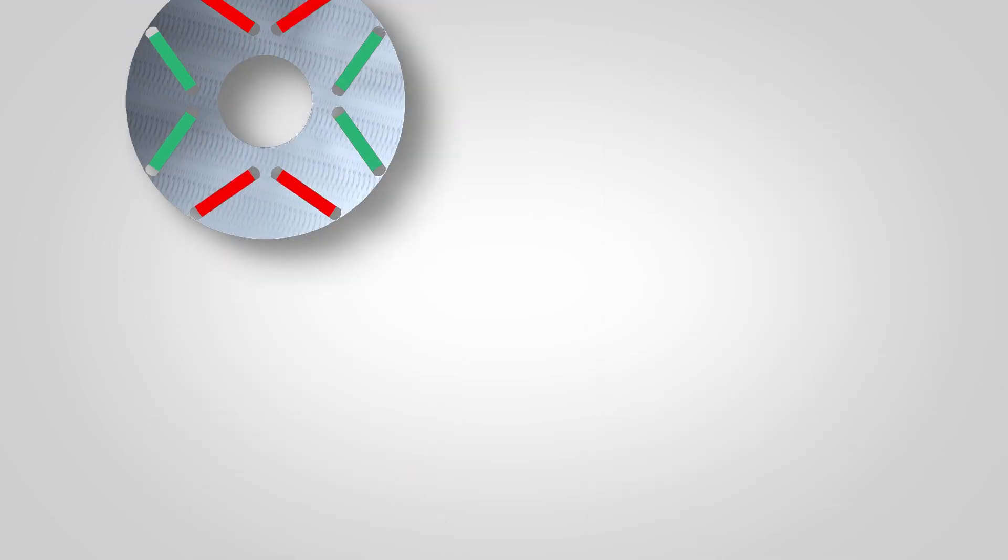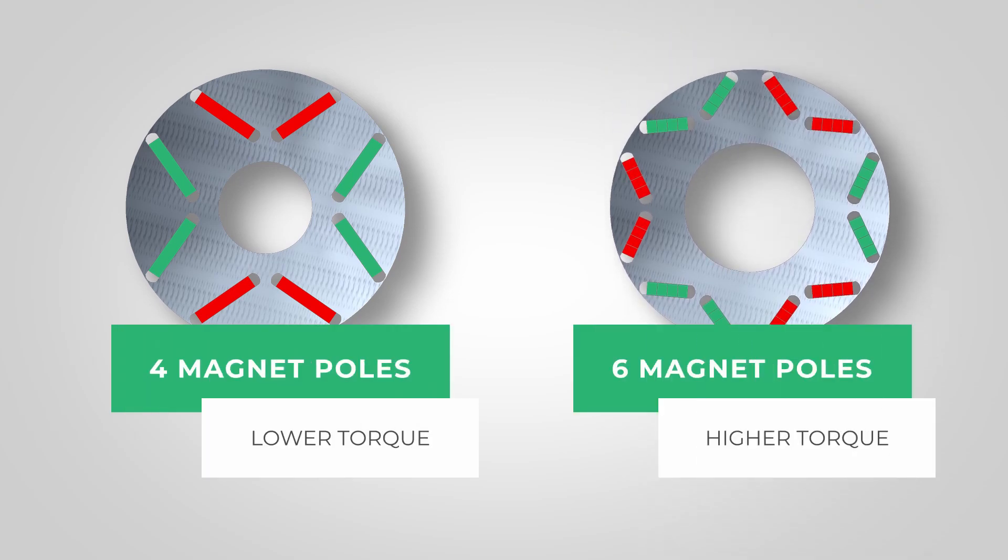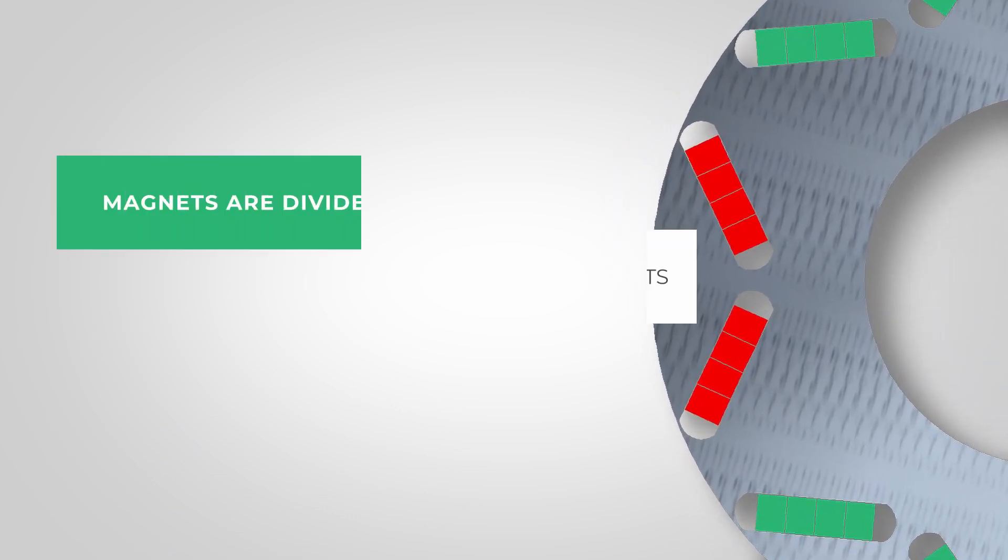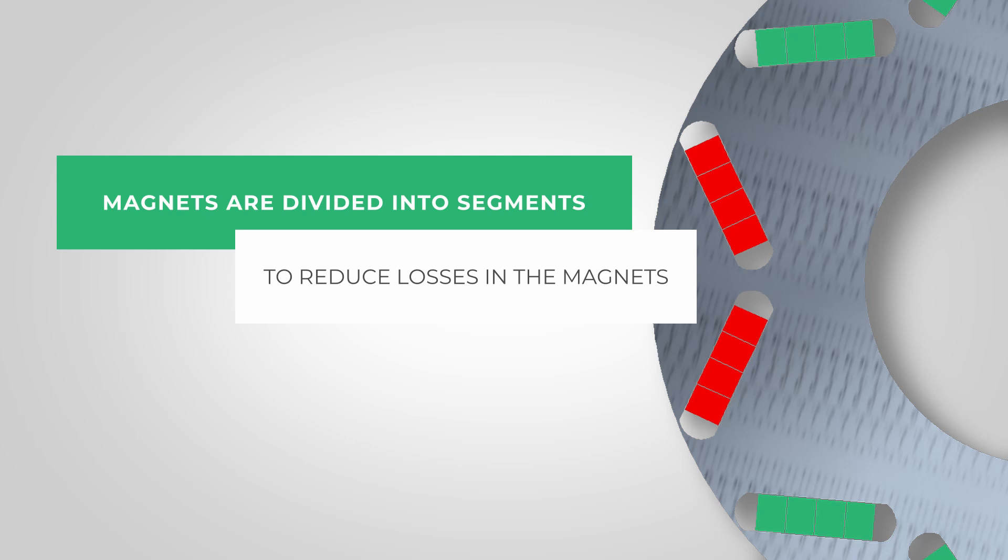Instead of four magnet poles, the new Tesla electric motor has six magnetic poles. This increases the torque of the motor, but it also increases the losses in the sheet metal, in the windings, and in the permanent magnets, especially at high speeds. This is also a reason why the permanent magnets are divided into segments to reduce their losses.